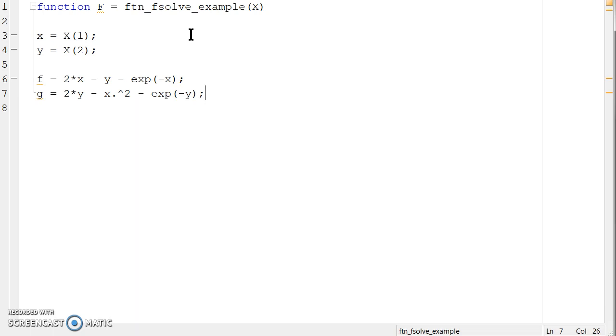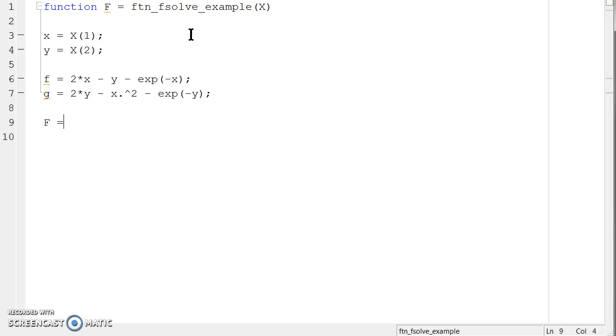In the end, my output variable has to be capital F, which is my vector value, my vector of equation evaluations. So, in the end, I want F, capital F, is equal to the vector [little f; G]. So, it's a column vector. This is what my function would look like.